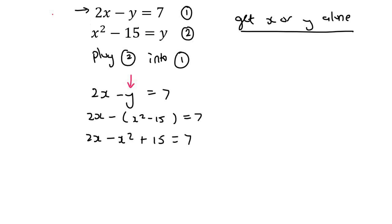I'm going to bring everything to the right-hand side, and so that's going to give us x squared minus 2x, and then plus 7 minus 15 is negative 8.